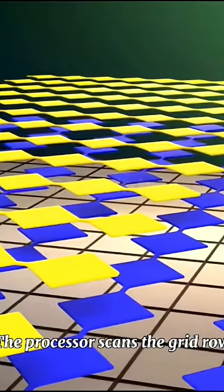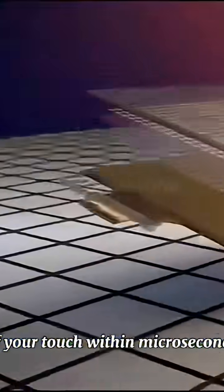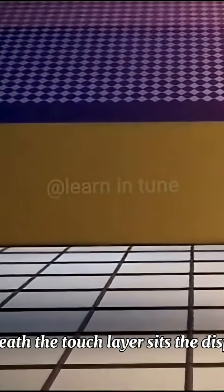The processor scans the grid row by row and column by column, pinpointing the coordinates of your touch within microseconds. Beneath the touch layer sits the display.